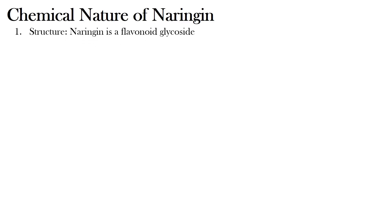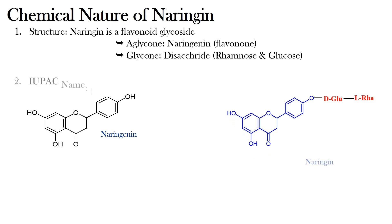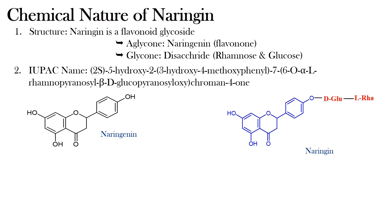Chemical nature of Naringenin. Naringenin is a flavonoid glycoside, meaning it consists of two parts: the aglycone and the glycone. The aglycone of Naringenin is called naringenin, which is a flavanone, whereas the glycone part consists of a disaccharide made of rhamnose and glucose.